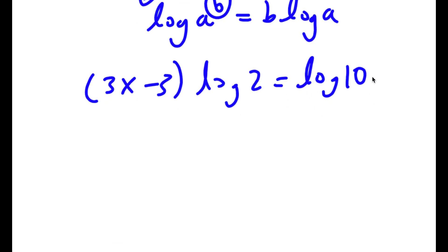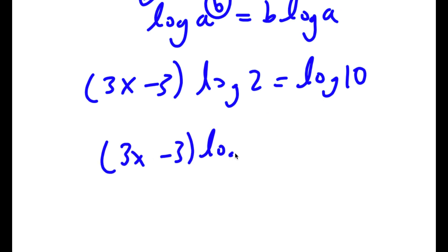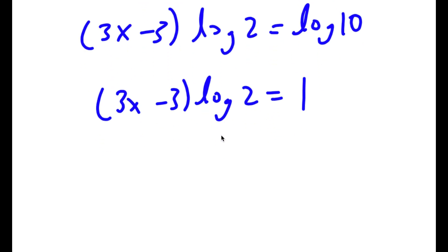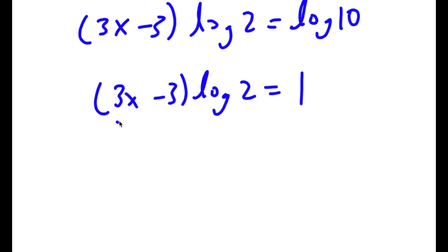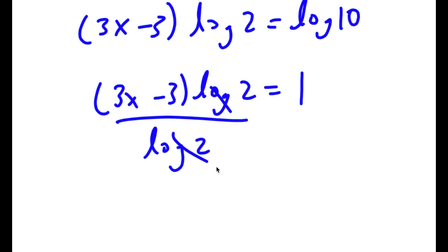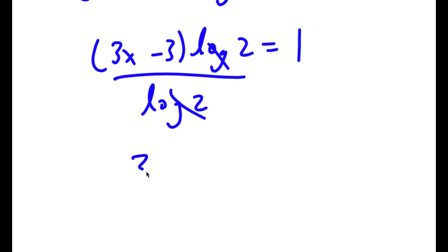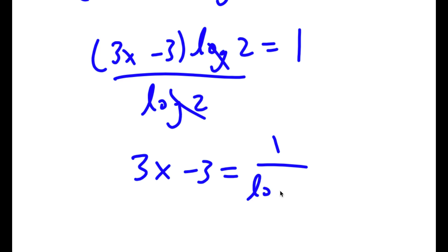Now log 10 is actually equal to 1, so now I have (3x minus 3) times log 2 is equal to 1. If I divide both sides by log 2, these two cancel out and I get 3x minus 3 is equal to 1 over log 2.